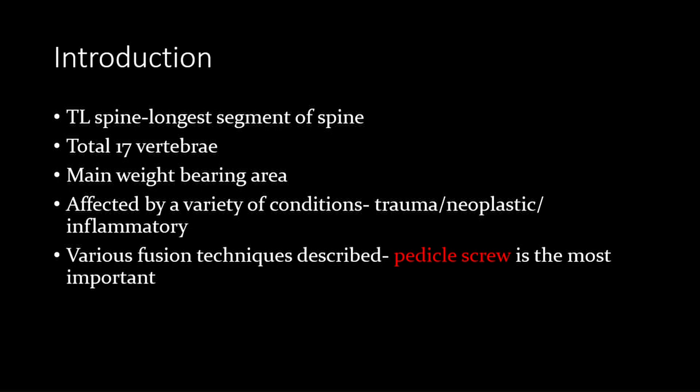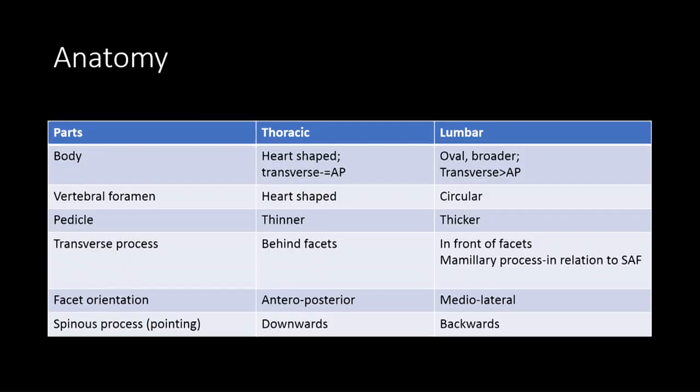This is an extension of the open system. The thoracolumbar spine is the basic segment of the whole spine where we are going to do this kind of fixation. What are the parts of any vertebra? We have the sawbone model - you can have a look at it. All of us are exposed to the sawbone model but we don't look at it with the minute detail that is required, and this workshop gives us an opportunity to do that.